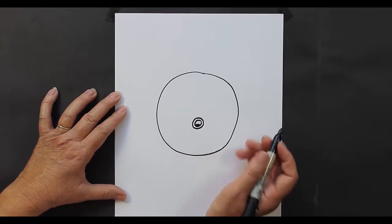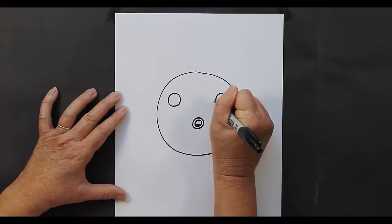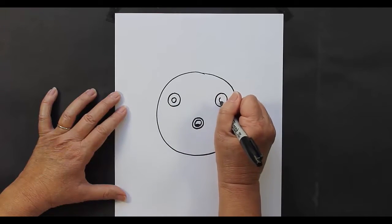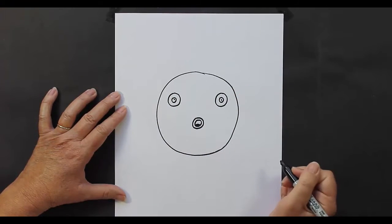Then we're going to do his eyes. So we have big circles, and then we have smaller circles, and then a dot right in the middle.